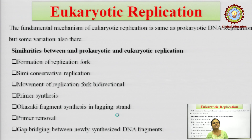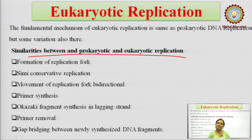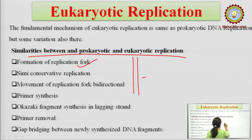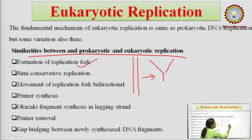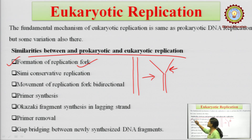First, I will discuss the similarities between prokaryotic and eukaryotic replication. The first similarity is that in both cases there is formation of a replication fork. The DNA strand, once replication begins, opens up in a Y form — this is your replication fork. This phenomenon is common in both organisms.